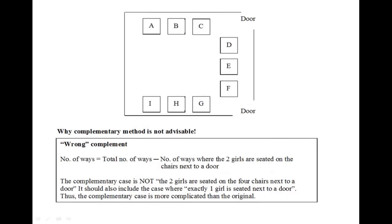Now some of you when you are doing this question might think of the complementary method. However, in this case it's not advisable. Some of you will think of the wrong complementary method, which is the number of ways is equivalent to the total number of ways minus away the number of ways where the two girls are seated on the chairs next to a door.